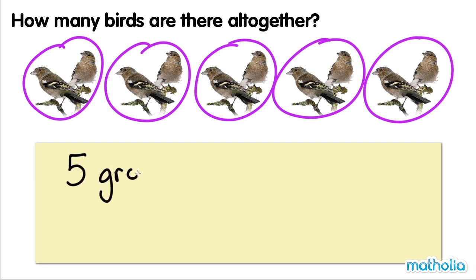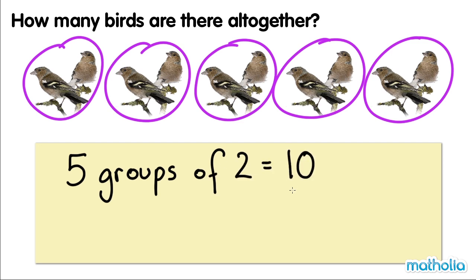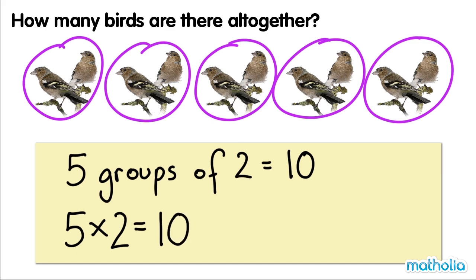Five groups of two equals ten. Five times two equals ten. There are ten birds all together.